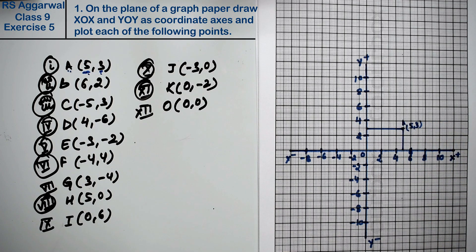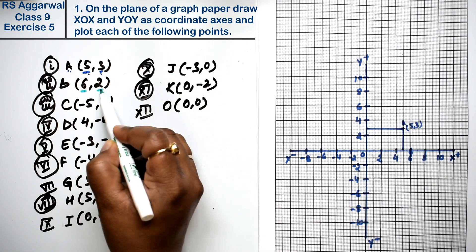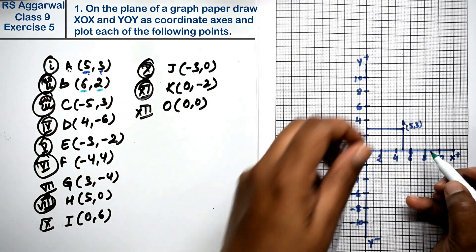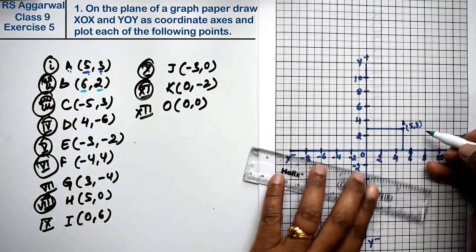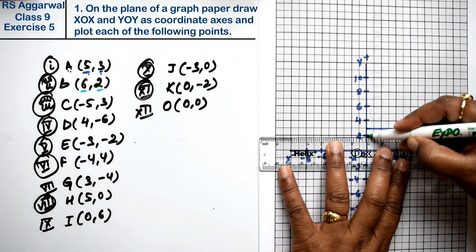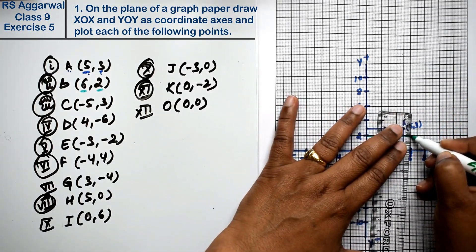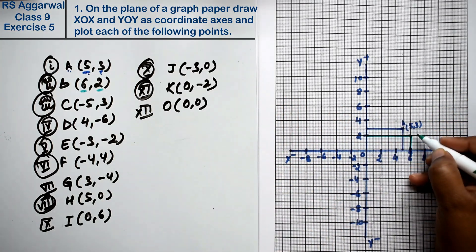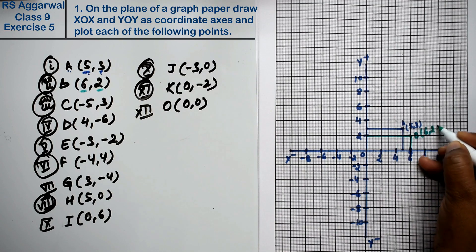We mark each point. For example, the next point is B(6, 2). How much is x here? x is 6 and y is 2. So we go to x=6 and extend up to y=2. This is point B at (6, 2).